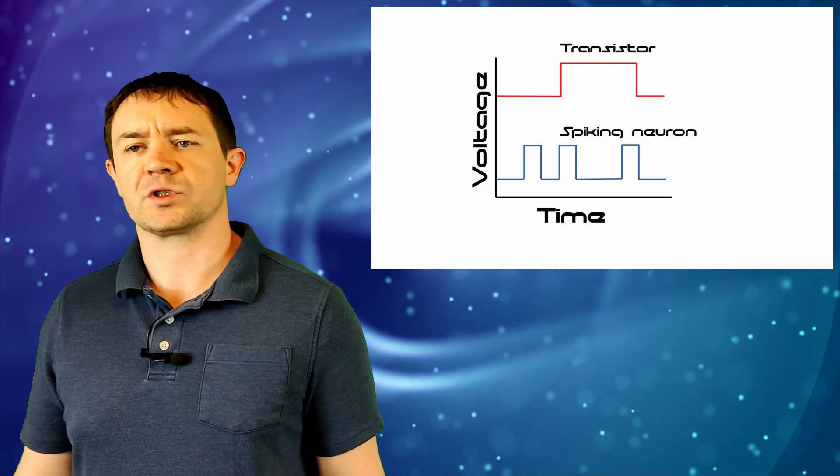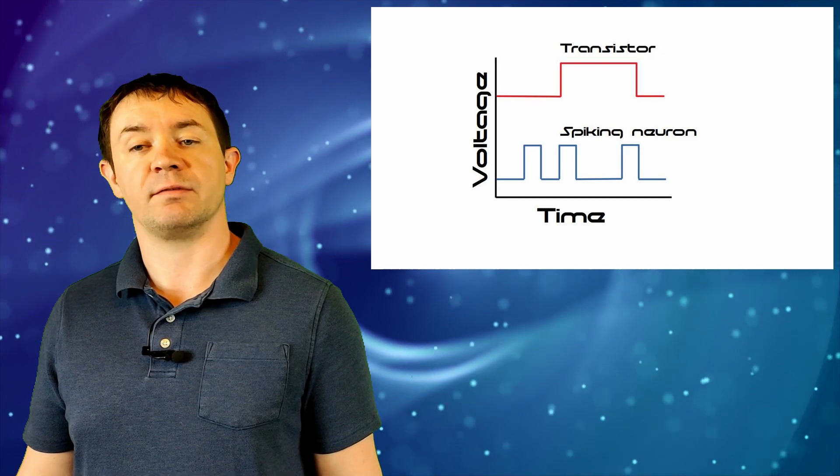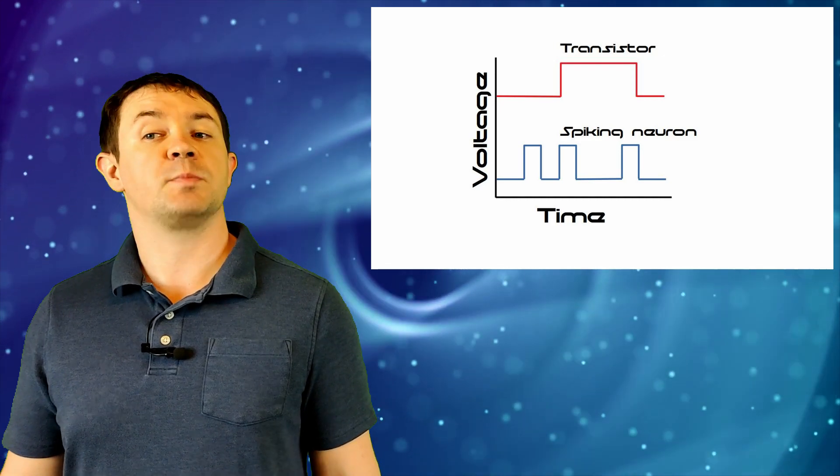These signals are time-encoded, which means their duration is important, as well as their magnitude. Think of this kind of like Morse code, where letters are represented by a series of pulses of various duration. This is called spiking, and it is believed to be a critical component of neuromorphic systems.